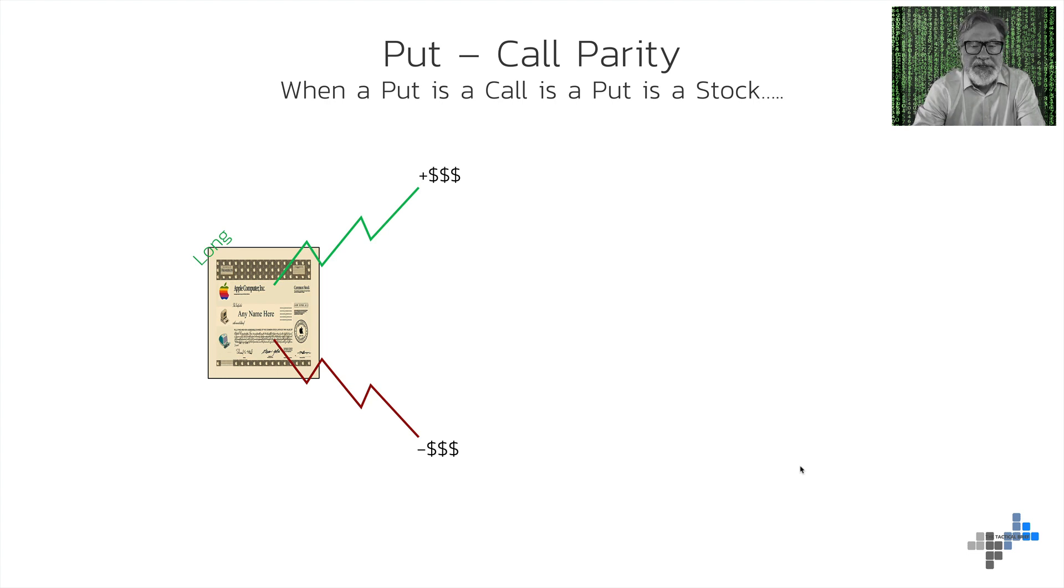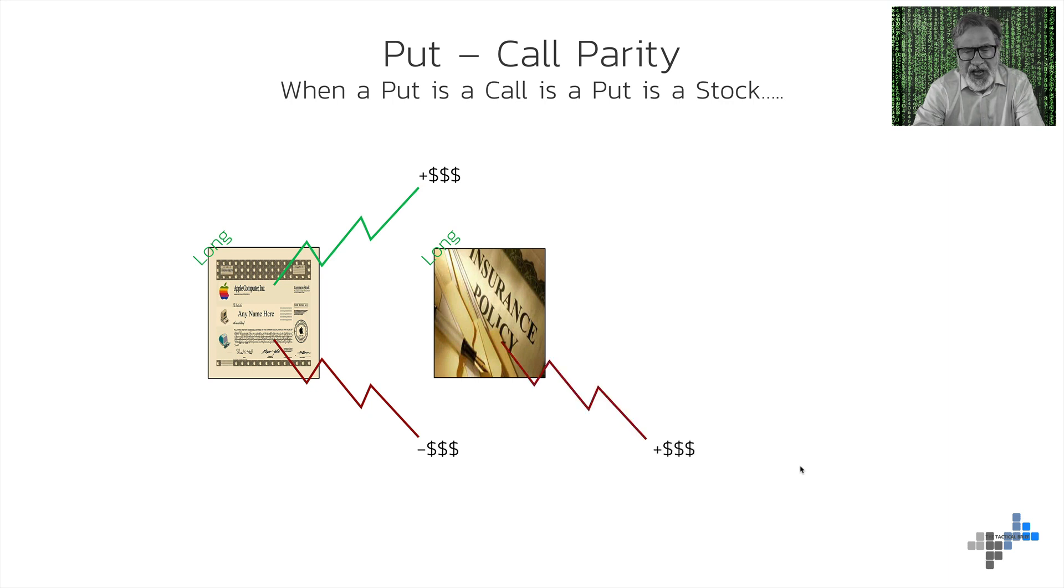So what could I do to protect myself against that? Well, very simple. I buy an insurance policy. This insurance policy will protect me to the downside. I get compensated if my Apple stock loses money. And on the upside, nothing happens. If you buy house insurance and your house doesn't burn down, you also don't get any money.